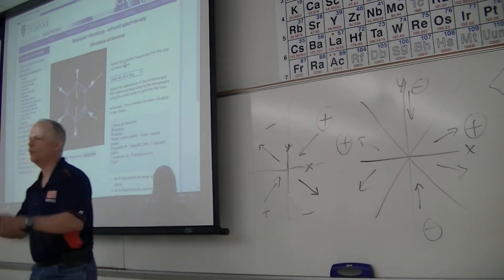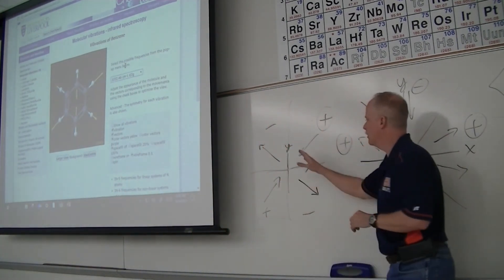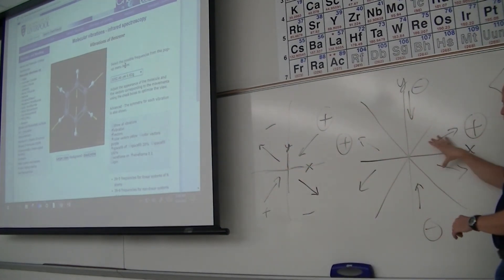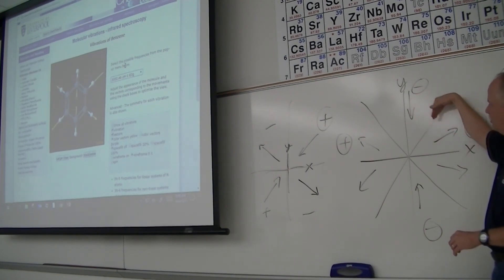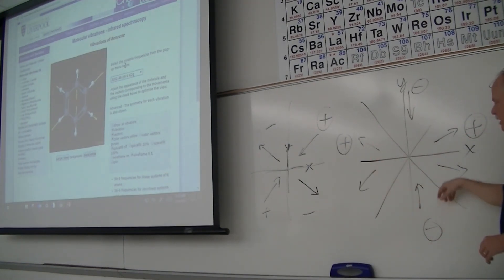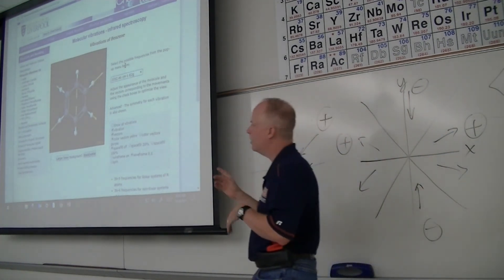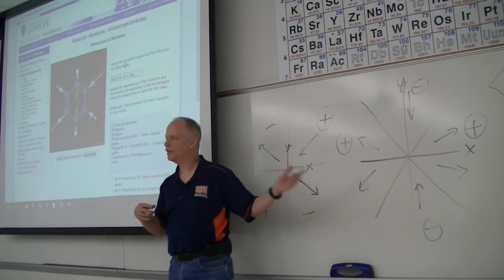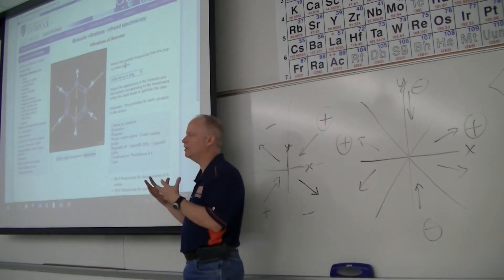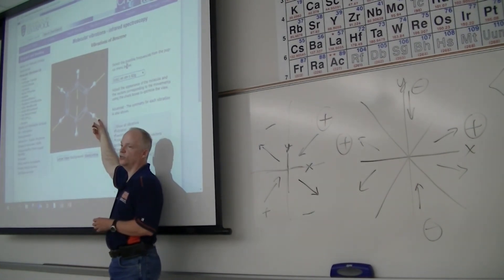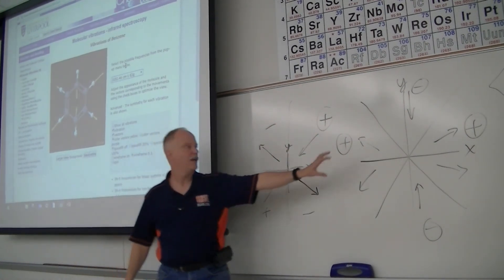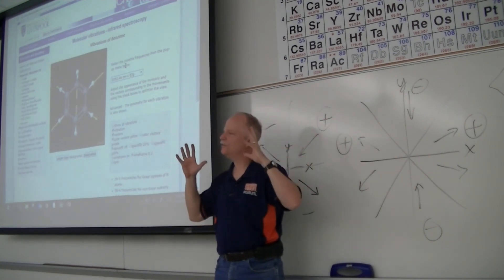These degenerate modes have the same frequency. Looking at the character table, they're a degenerate set. It's harder to see the symmetry with arrows than with molecular orbital shading, where the colors change at the nodes. If you think of outgoing arrows as one color and incoming arrows as another, you see this pattern of color changes corresponding to the XY or x² − y² character.